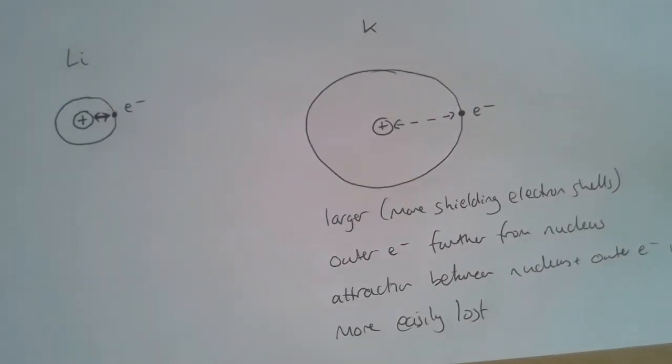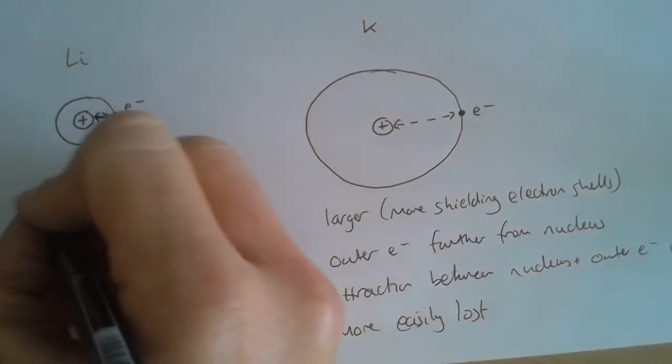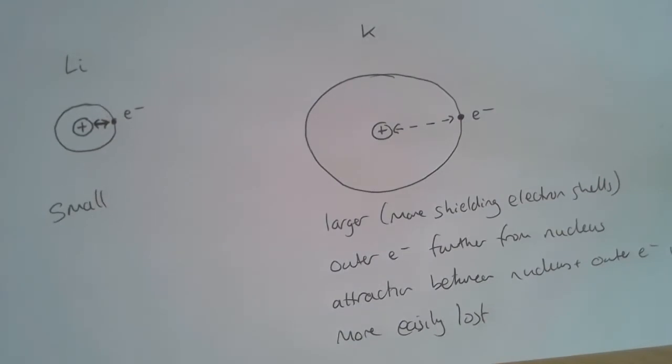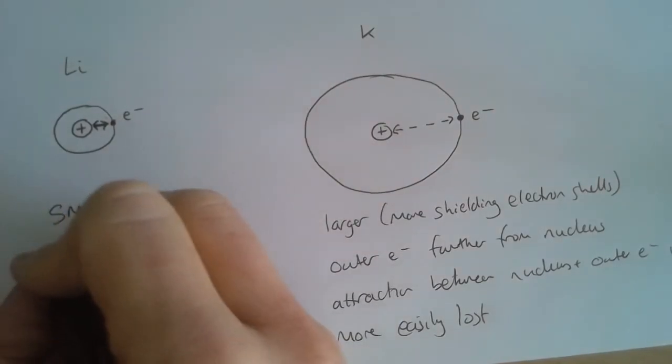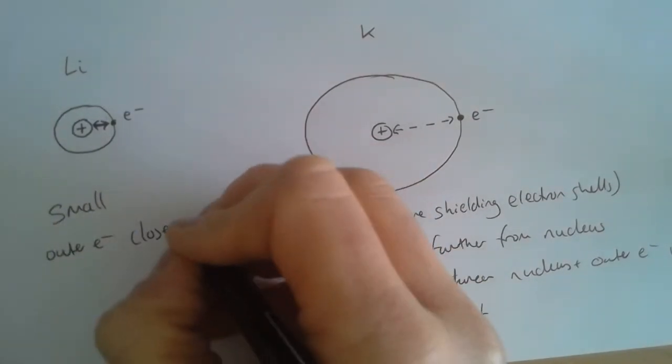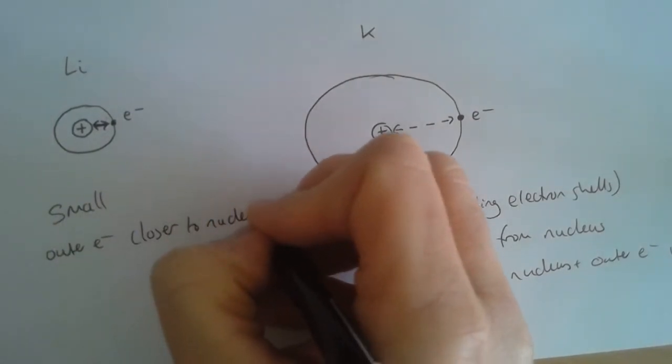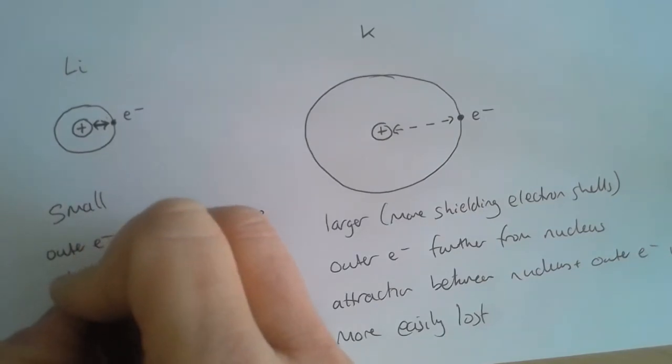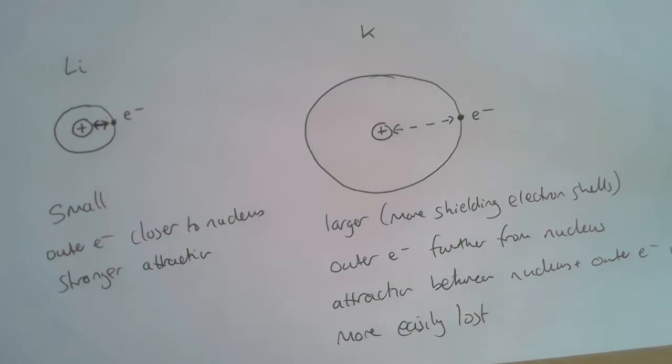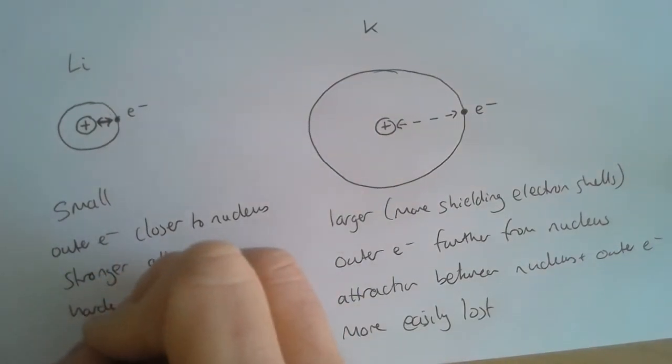We'd say the opposite is true for lithium. It's smaller, it's got less shielding electron shells, the outer electron is closer to the nucleus, and therefore it's got a stronger attraction and harder to remove.